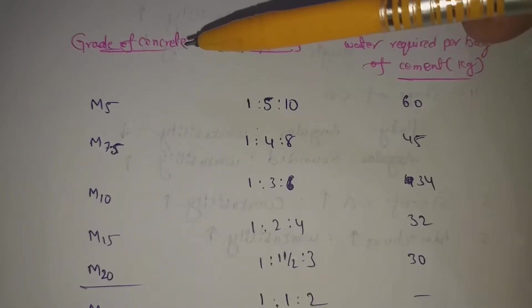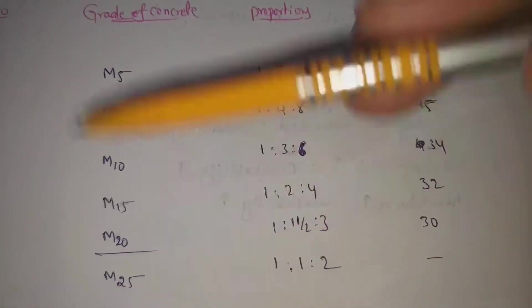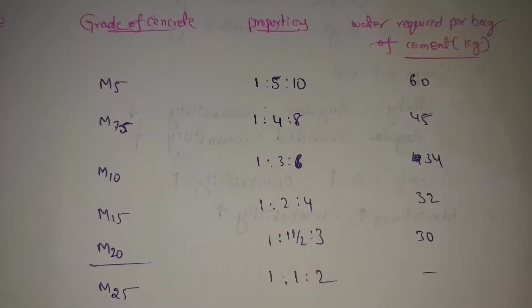Fine aggregate means sand. Coarse aggregate means gravel. So, here are different grades. We use M5 and M25 to different mix proportions.